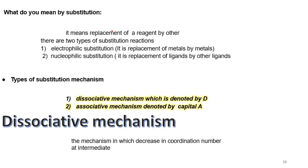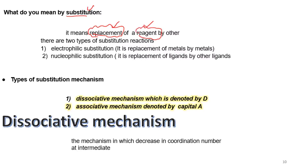Welcome to all of you. Today we are going to talk about substitution reactions in octahedral complexes. Substitution means simply a replacement of one ligand in the metal complex by another ligand, called the reagent. The reagent may be a nucleophile or an electrophile.